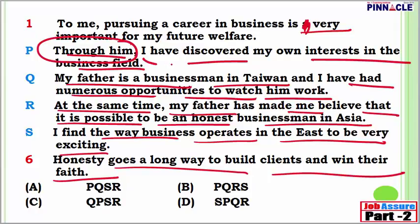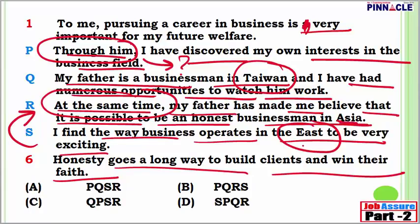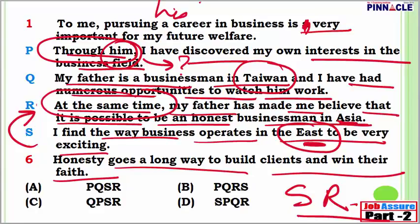Here we have 'through him'. We need to question what does 'him' refer to. 'At the same time' is another important keyword. Here we are talking about the east, meaning in a way referring to Asia, because the father is a businessman in Taiwan. R and S are linked — they will probably go together, with S first and then R. 'Him' is referring to his father. So using the noun-pronoun formula, Q will be there first and then P. Q is followed by P.